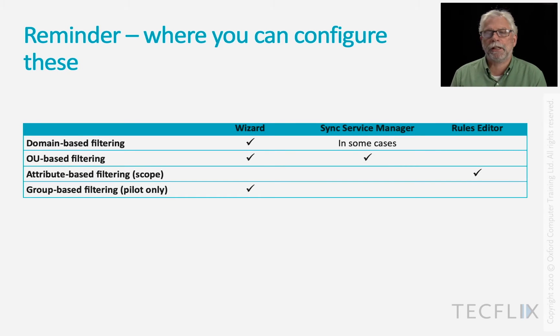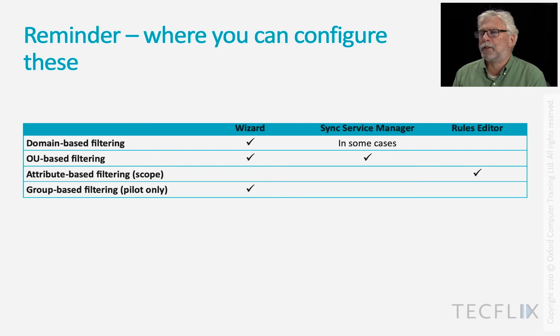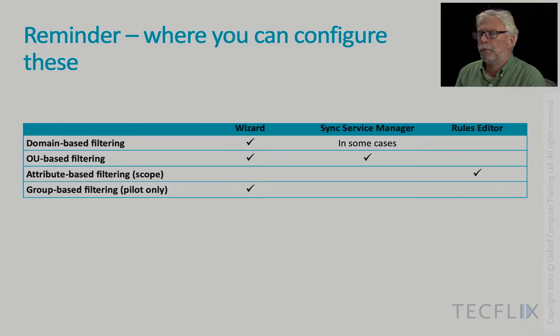Attribute-based filtering — that's filtering the scope filters in our rules — is only ever done in the rules editor, that's for sure. And then group-based filtering, which we have to keep reminding you is for pilot purposes only, is only ever done in the wizard.